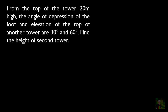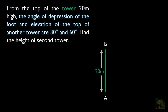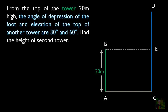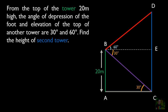The first tower AB is 20 meters. The second tower is CD. From the top of the first tower, there are angles of elevation and depression to the top and bottom of the second tower. We draw a horizontal line to measure these angles. Since the horizontal line is parallel to the ground, we conclude that angle ACB also equals 30 degrees. We will compare the common values of two right-angled triangles to solve this.